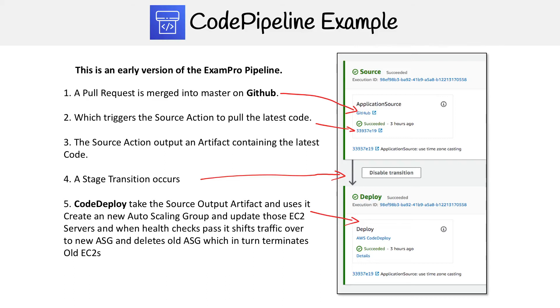Here I have an example of a CodePipeline. This is an early version of the ExamPro pipeline to deploy the application. It's very simple — there are only two stages: a source and a deploy. You don't necessarily have to have a build step.